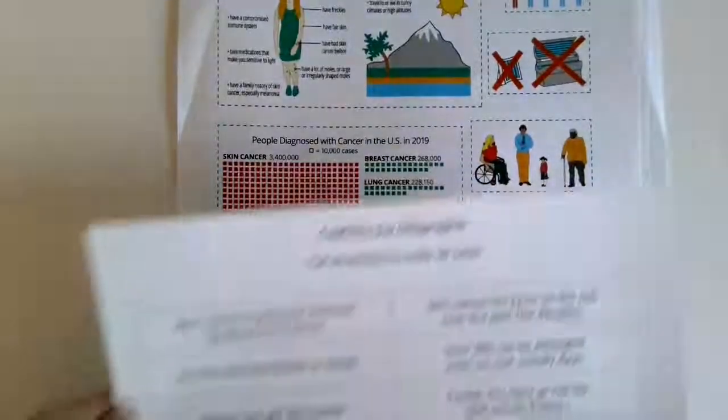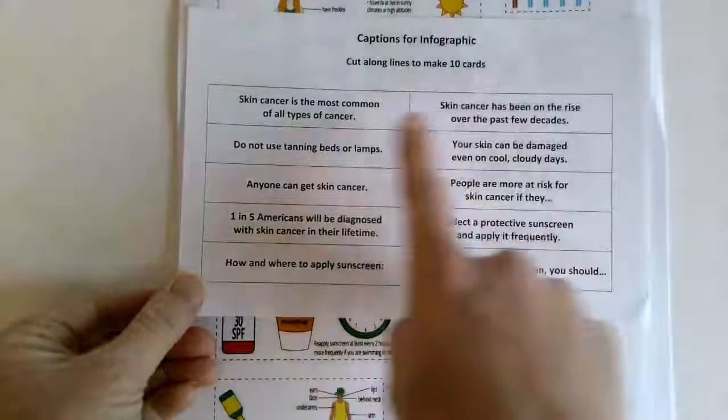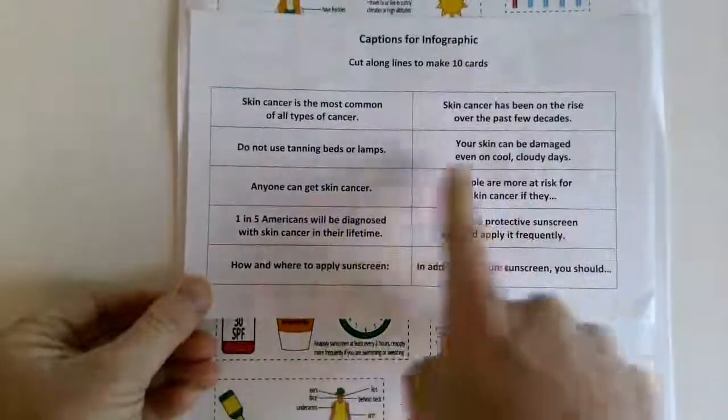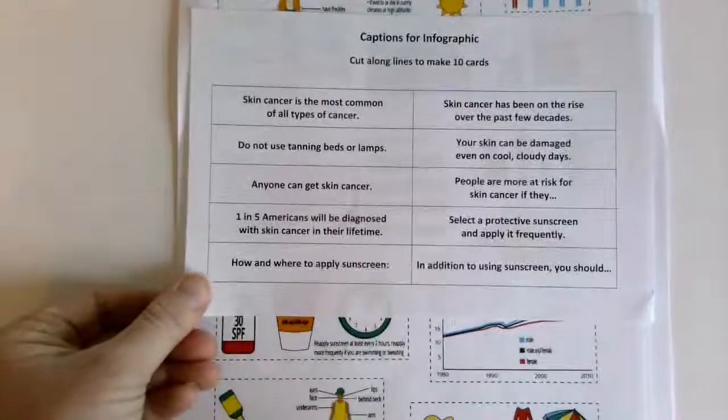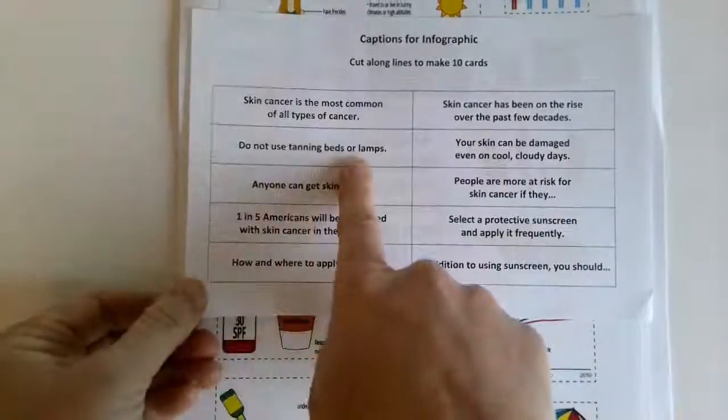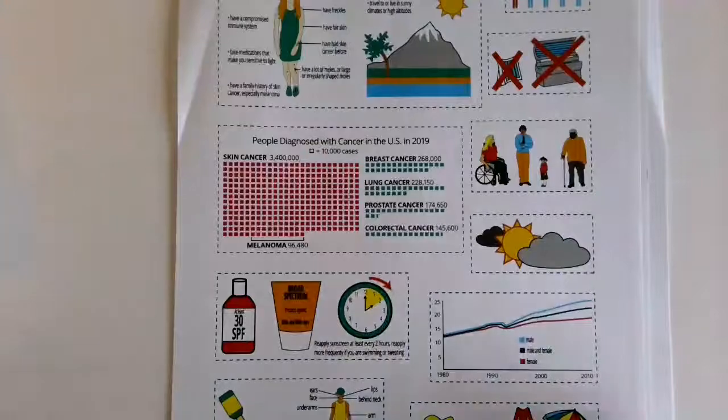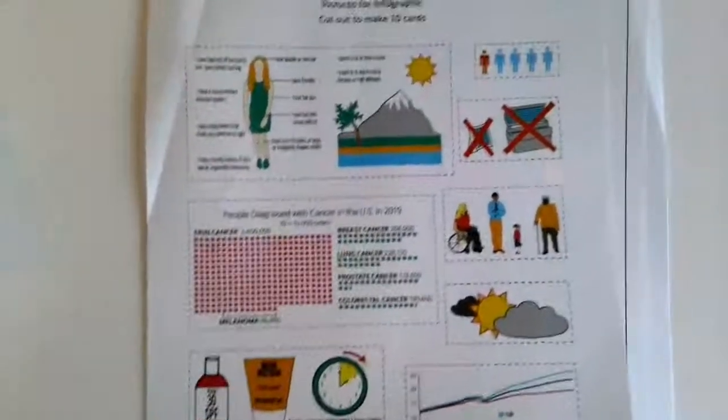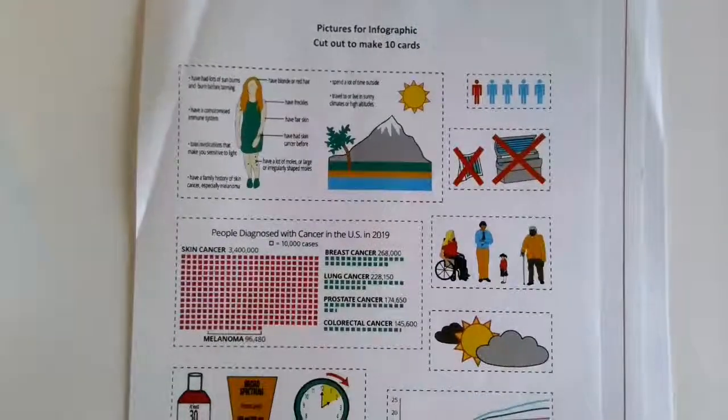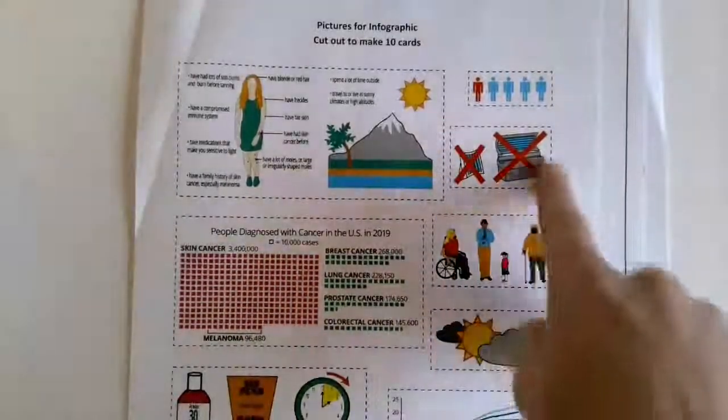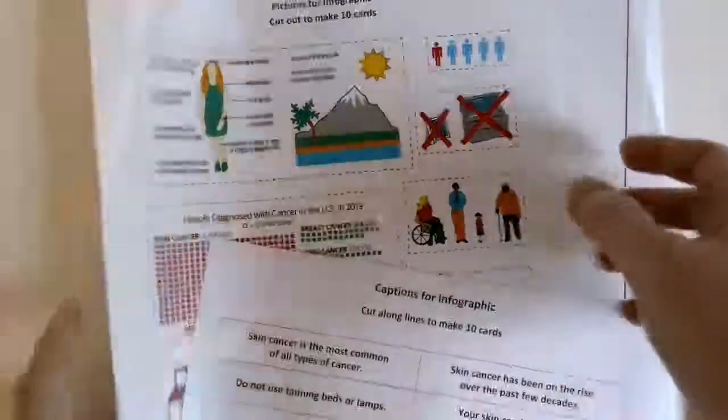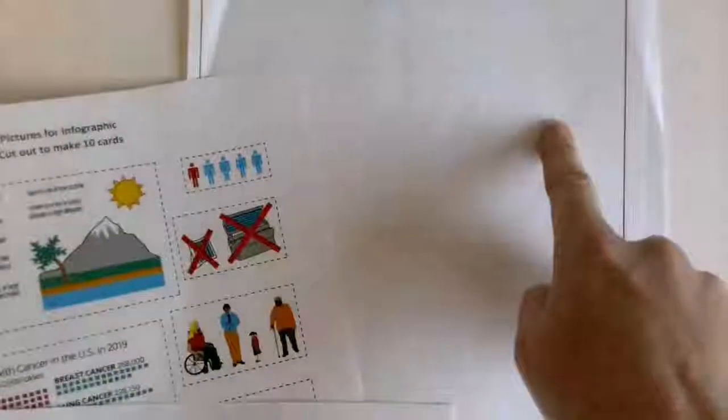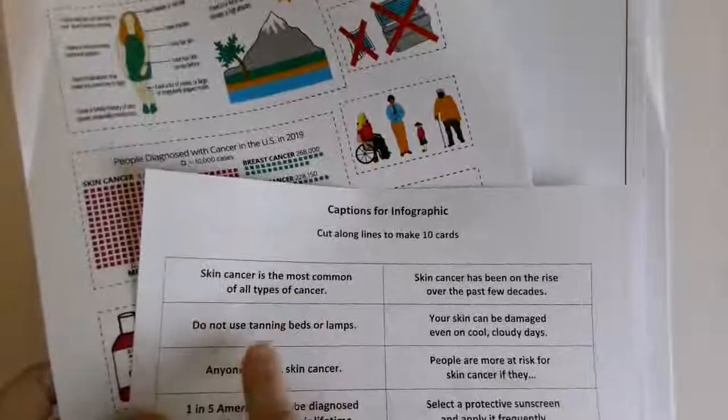You're going to cut these out and then you're going to caption them with these items. So you could say something like 'do not use tanning beds or lamps,' and so you would look here and find out which one looks like tanning beds or lamps. And here it is. So you would basically, on this piece of paper, cut out the tanning beds and the lamps and you're going to put that caption for 'don't use tanning beds and lamps' underneath it.